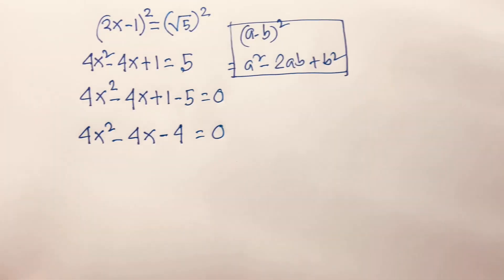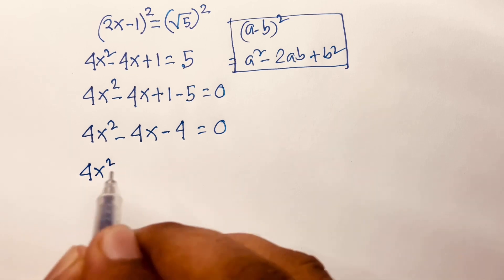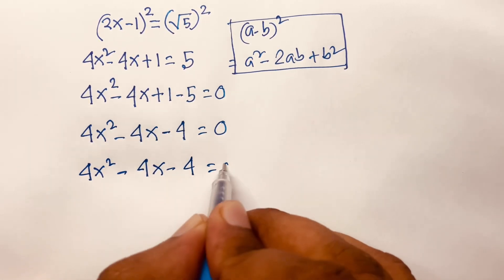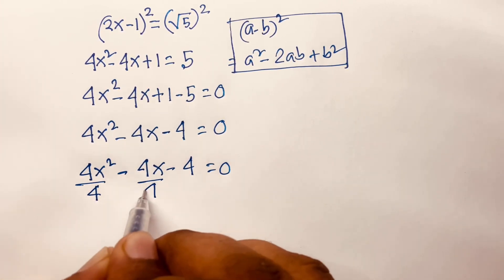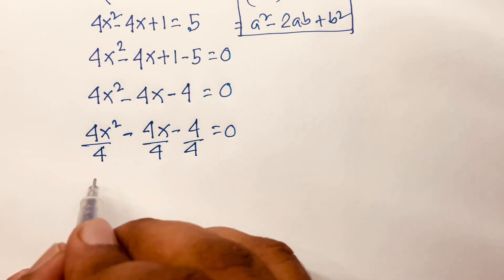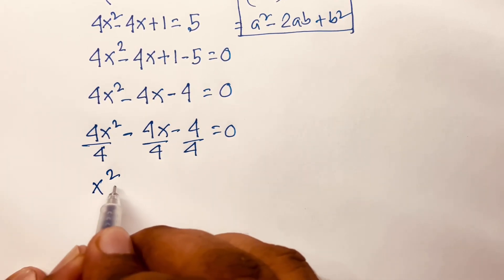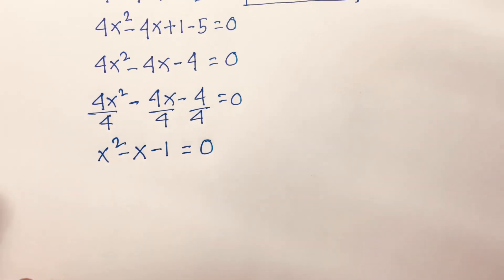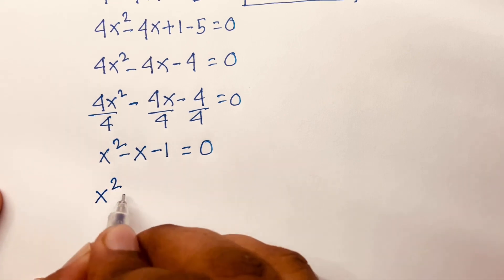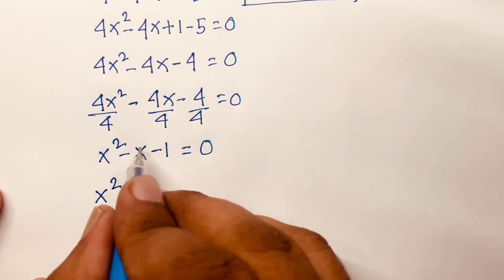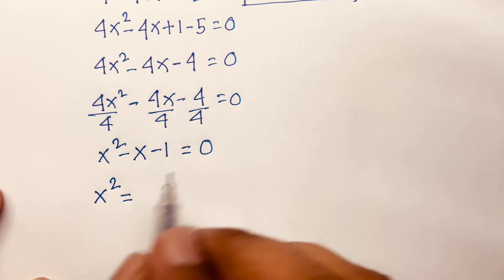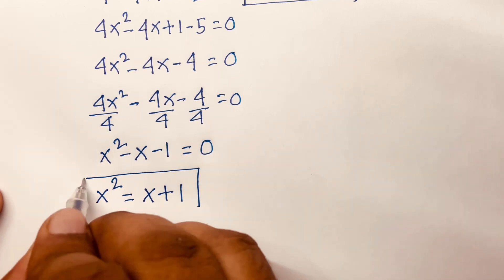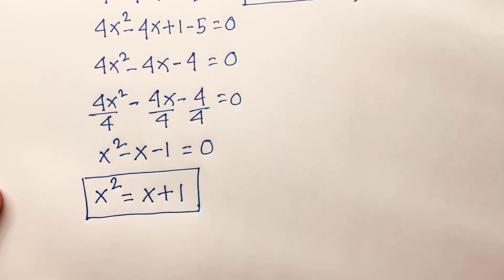Then I can say 4x squared minus 4x plus 1 minus 5 is equal to 0, which gives 4x squared minus 4x minus 4 is equal to 0. Dividing both sides by 4, we get x squared minus x minus 1 is equal to 0, so x squared is equal to x plus 1.